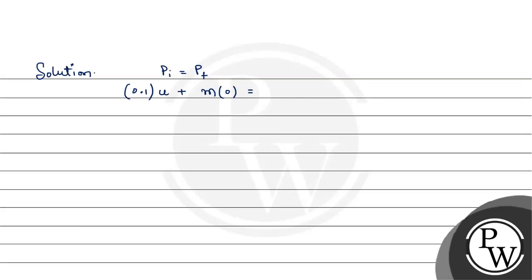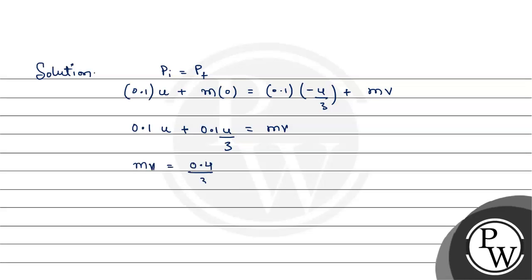The final momentum is: 0.1 times (−u/3) plus m times v. Solving: 0.1u + 0.1u/3 = mv, which gives mv = 0.4u/3. Let's mark this as equation 1.